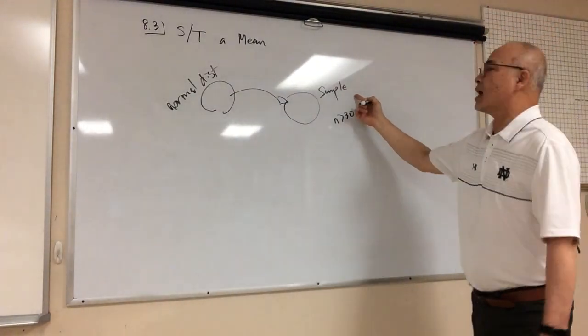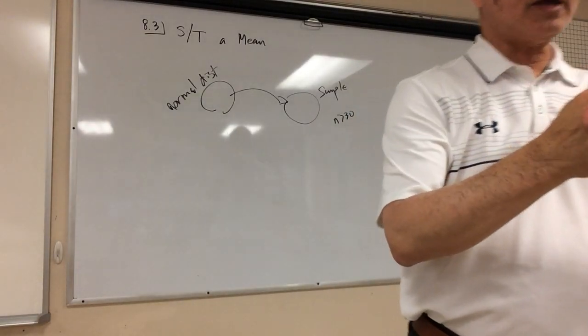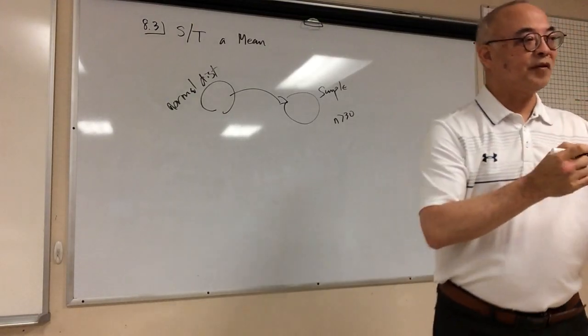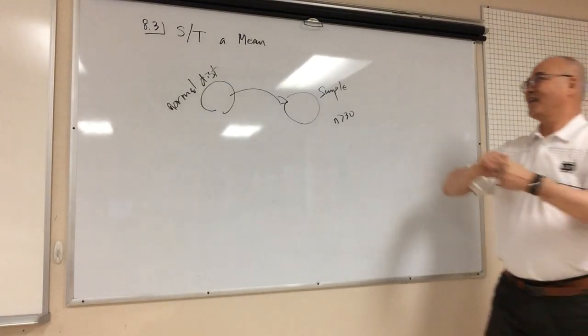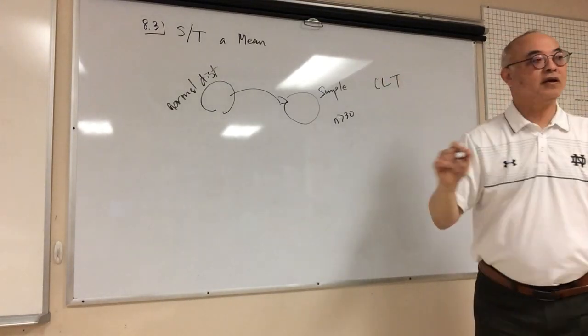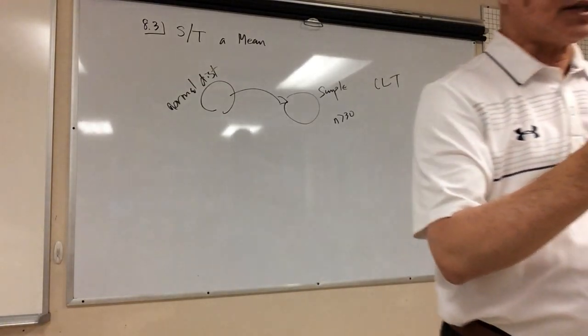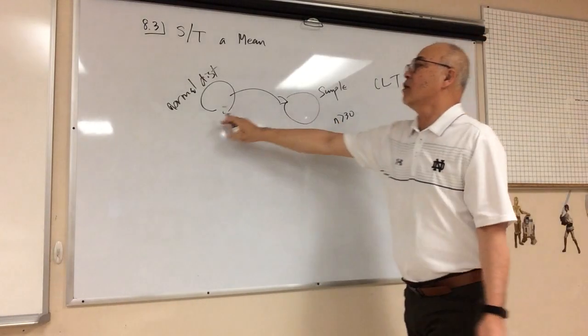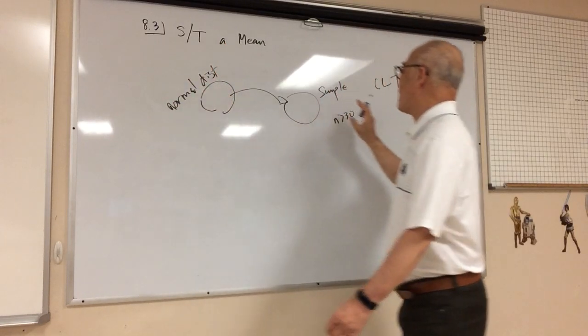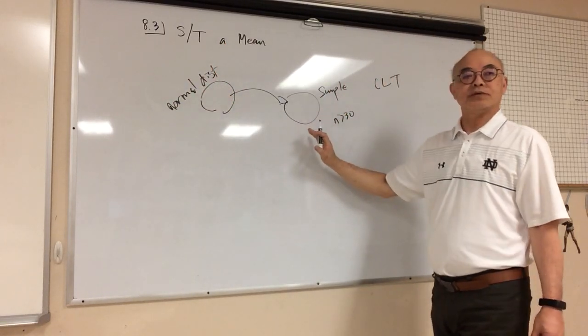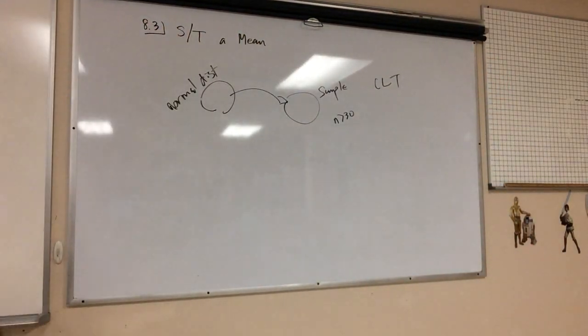In other words, the sample size that you're taking, if it's greater than 30, what does that let me do? What happens when n becomes greater than 30? It's a normal distribution. Why? Because of the central limit theorem. Remember the central limit theorem? We actually did this. It didn't matter what this population distribution was. Because as long as your n was greater than 30, the sample becomes your normal distribution.